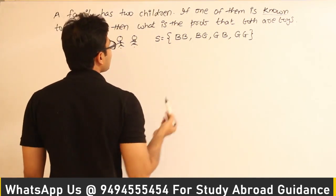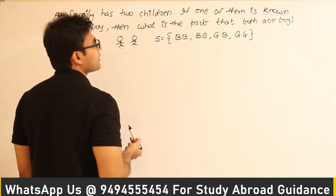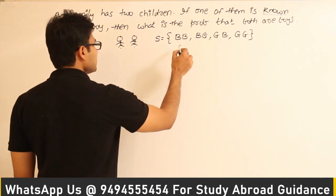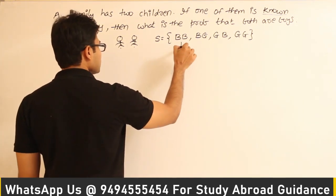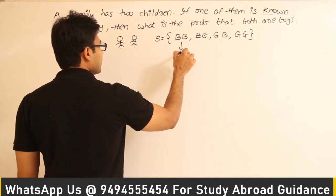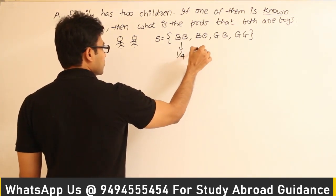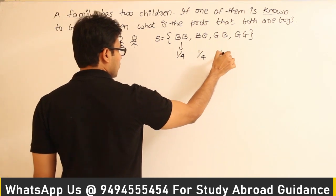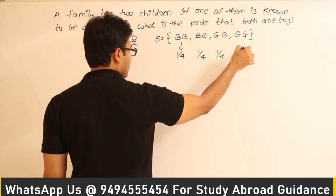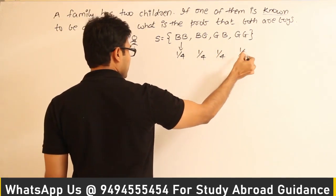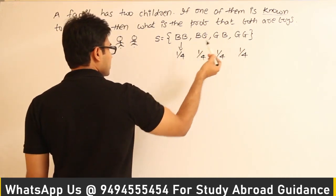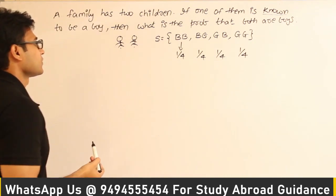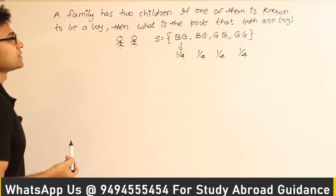Now, all these are equally likely. So what is the initial probability for each event? For each of the events, it is going to be 1/4, because 1 event divided by 4 total elements.